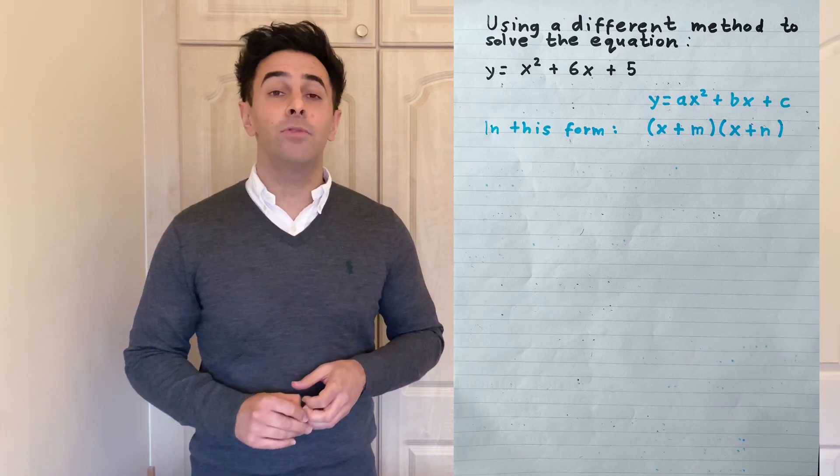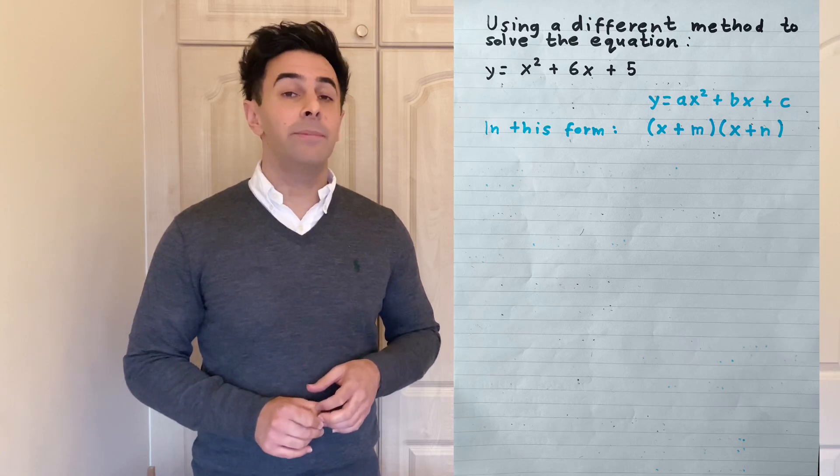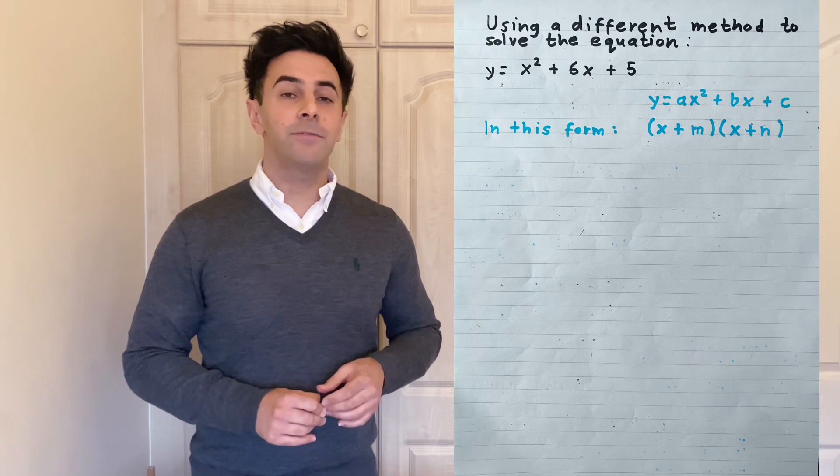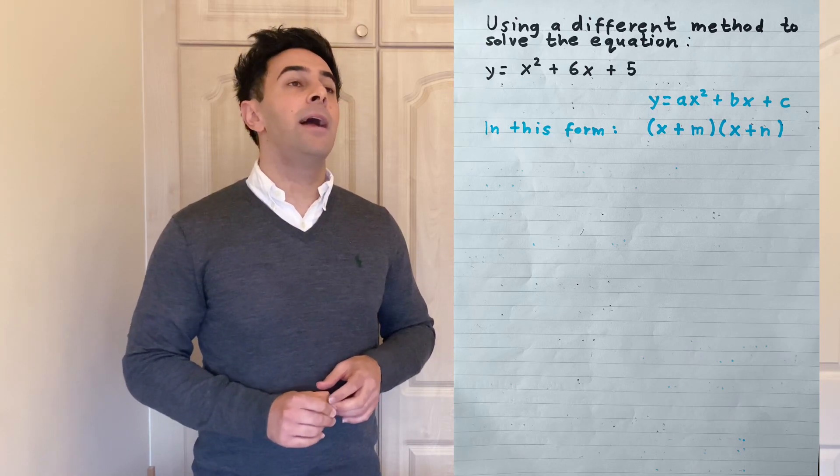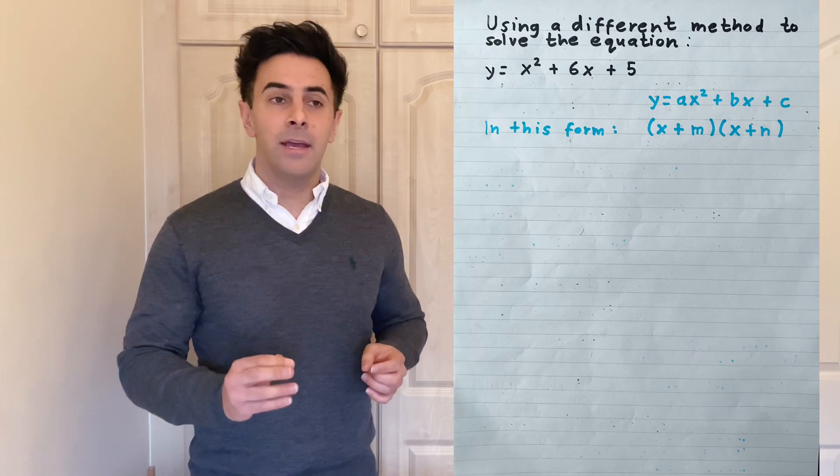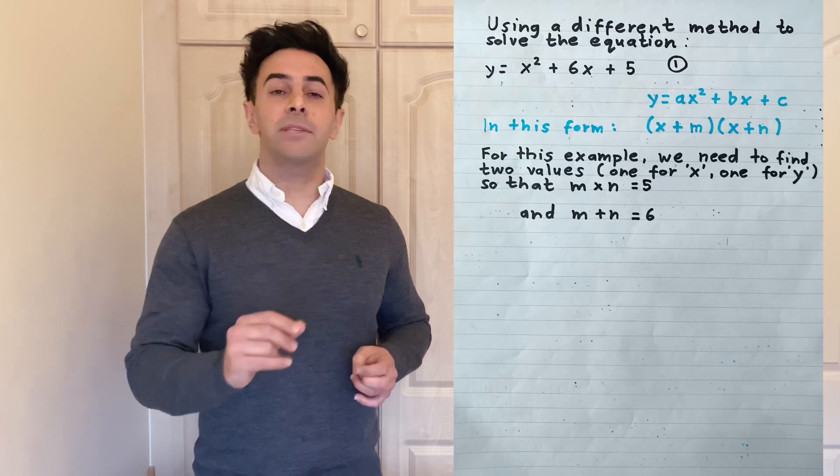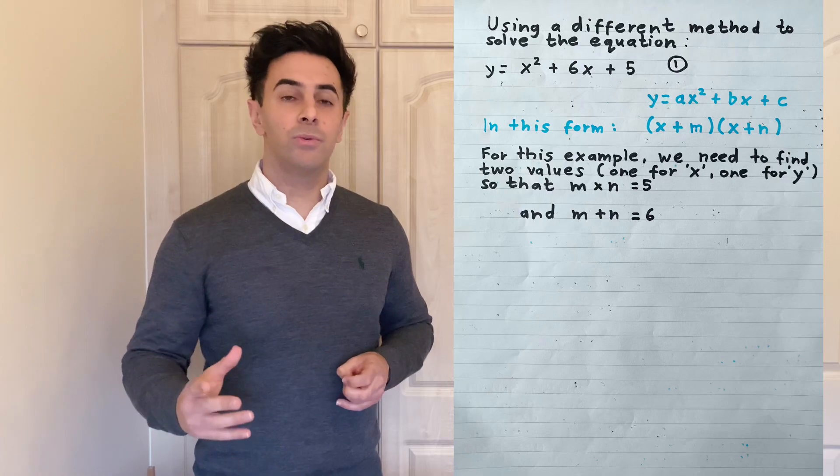To create brackets and therefore make it easier for us to eliminate and find the solutions of x in terms of y, we have to find two numbers that satisfy m and n such that m times n is equal to 5, and m plus n is equal to 6.